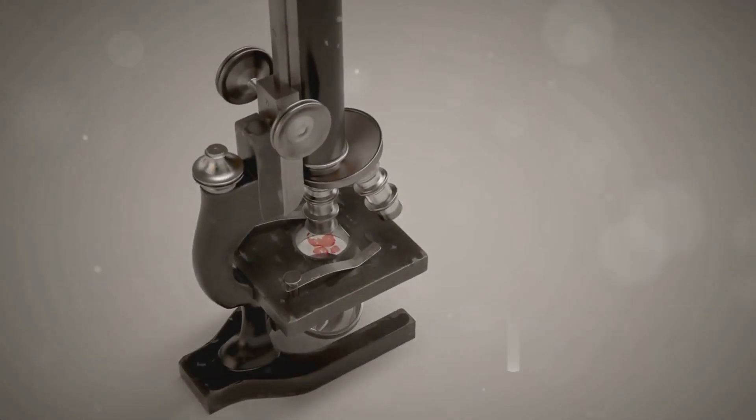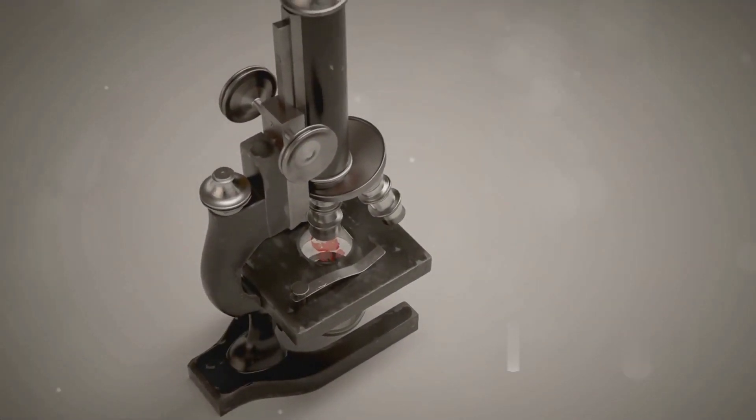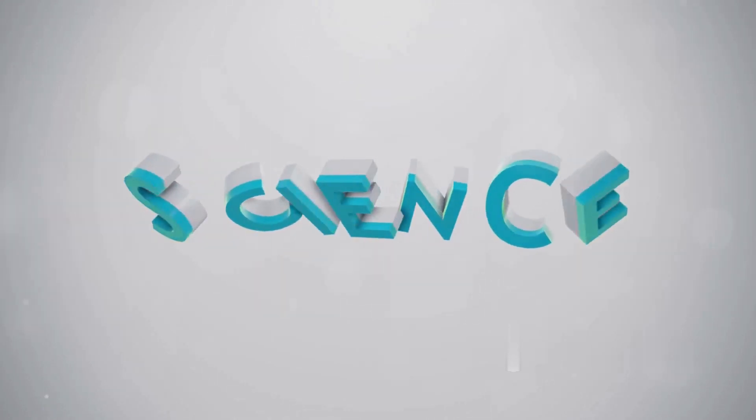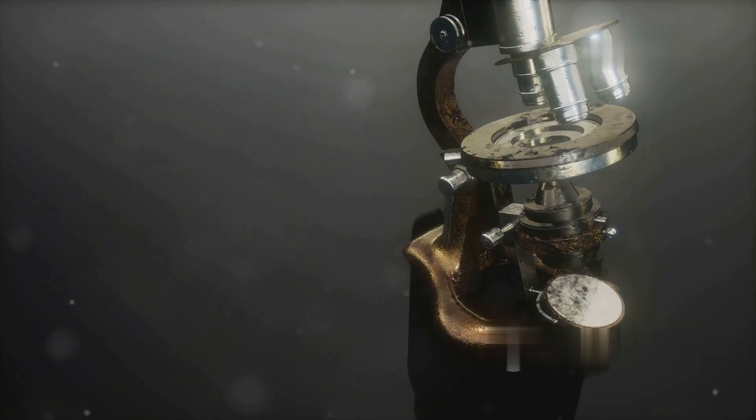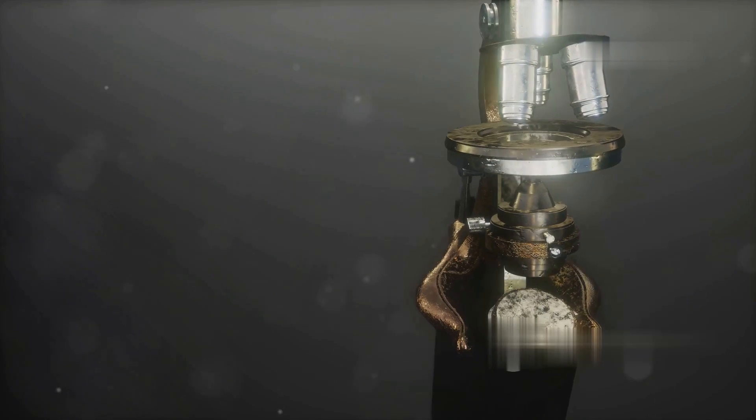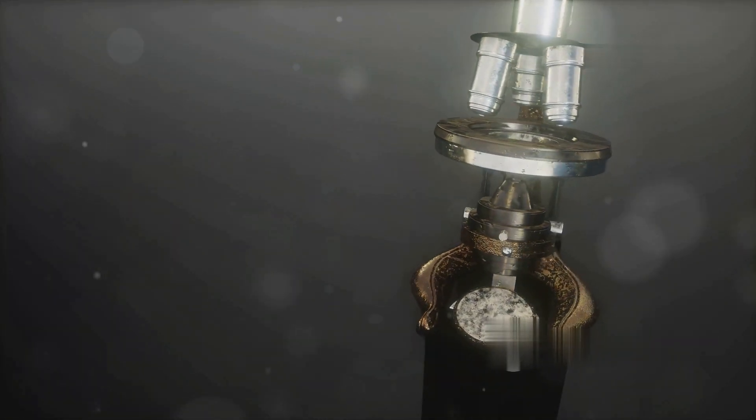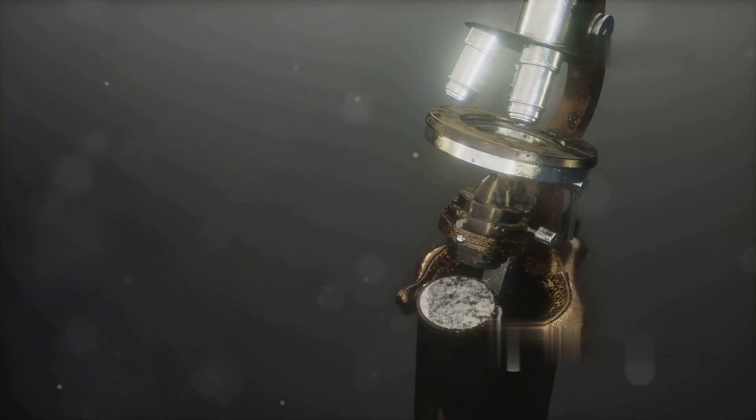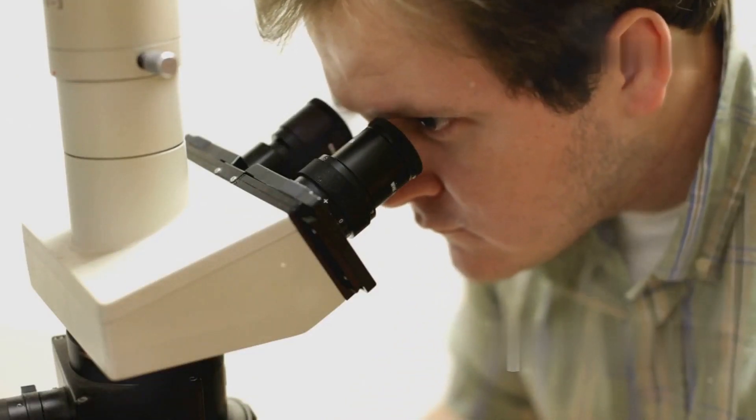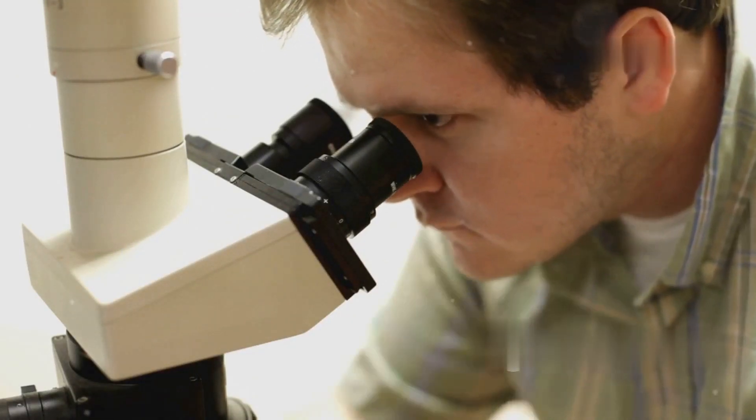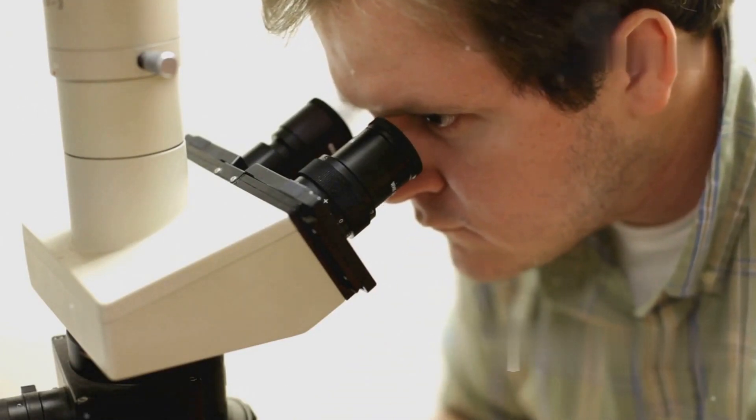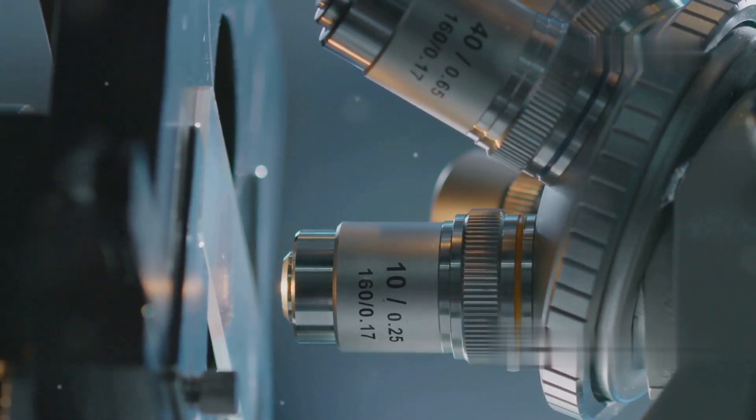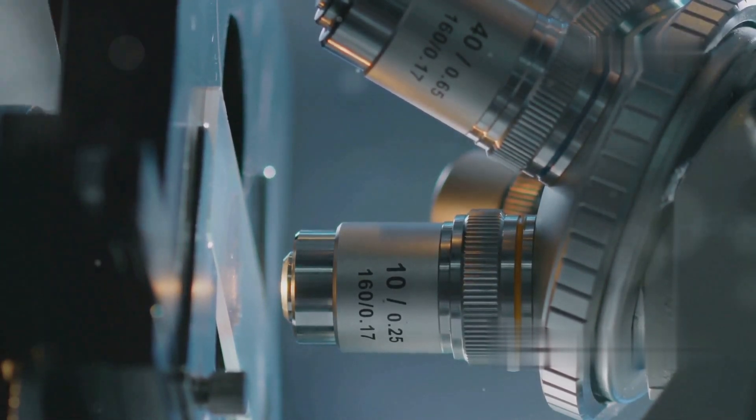The invention of the optical microscope in the 17th century marked a turning point in our understanding of the natural world. For the first time, scientists could observe tiny organisms and structures that were invisible to the naked eye. This breakthrough led to numerous discoveries and advancements in various fields of science. However, even the most powerful optical microscopes are limited by the wavelength of visible light. This means that there is a fundamental limit to the level of detail they can reveal. Objects smaller than the wavelength of light remain hidden from view, posing a significant challenge for researchers.